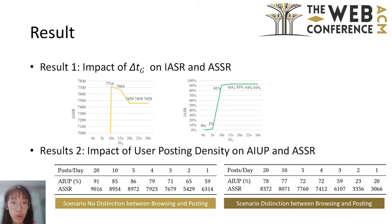We also discussed the influence of user activity on the results and compared the situation where the tracker does and does not distinguish between browsing and posting behaviors. It is found that the more active users are, the more likely they are to be accurately identified, and the identity alignment method can still accurately identify them when the tracker does not distinguish browsing and posting behaviors.